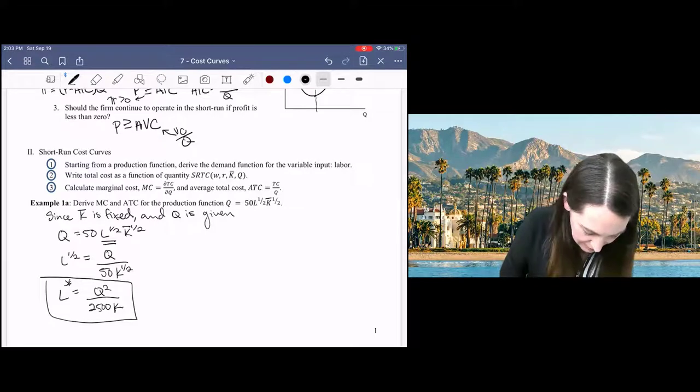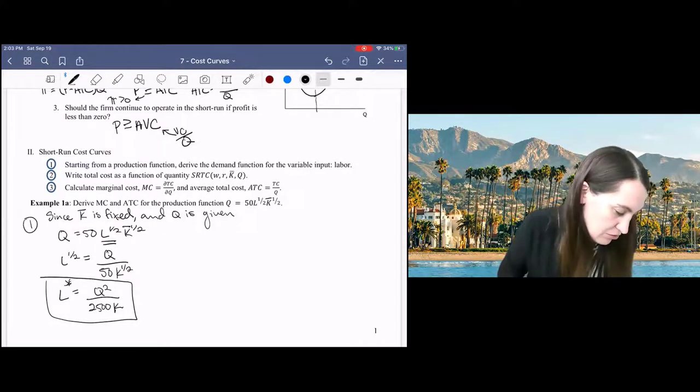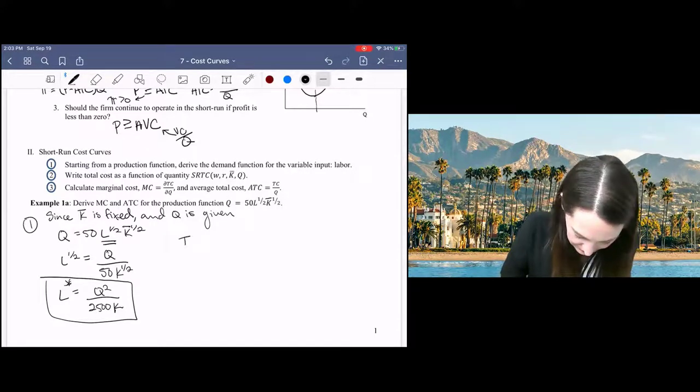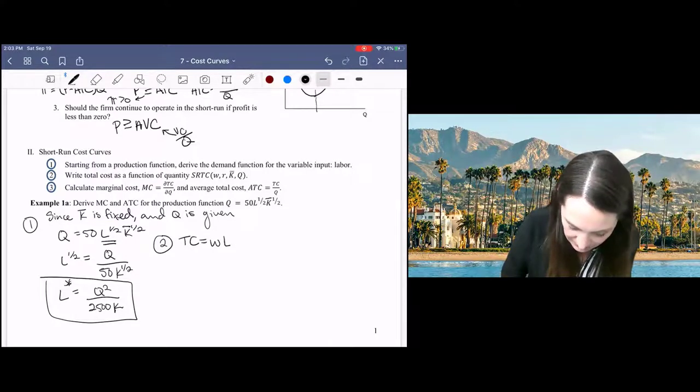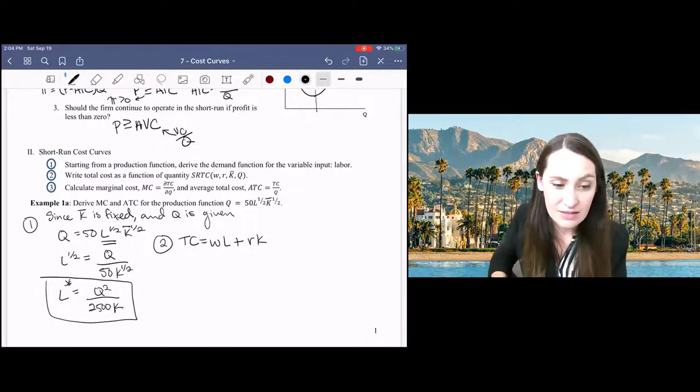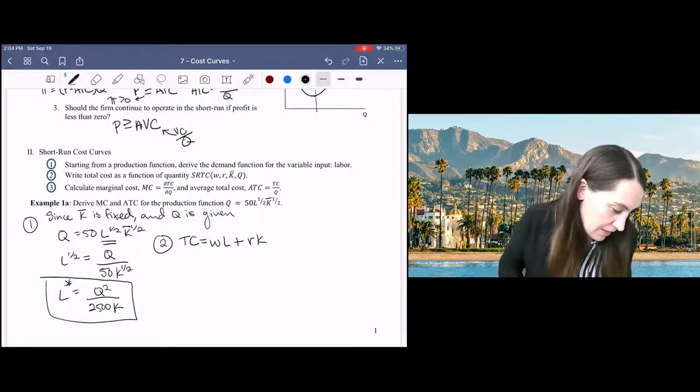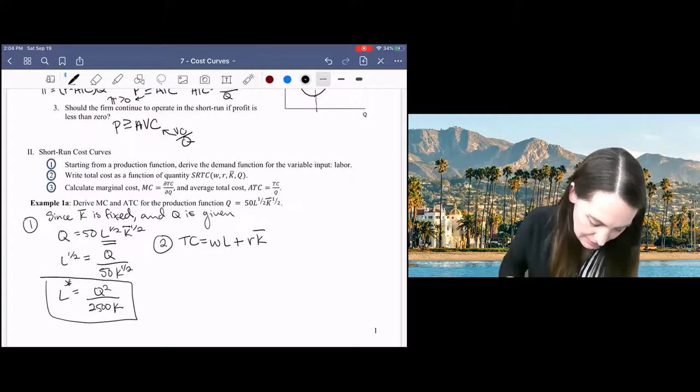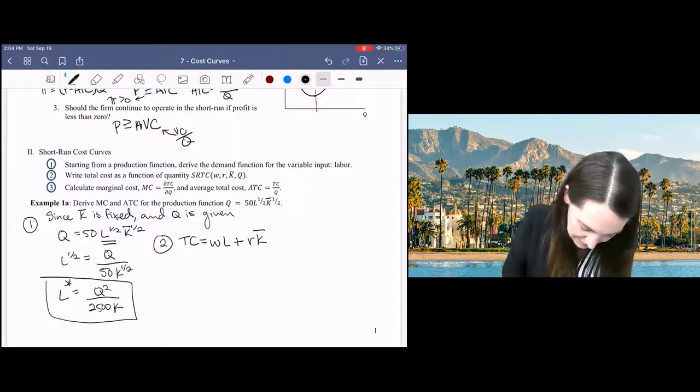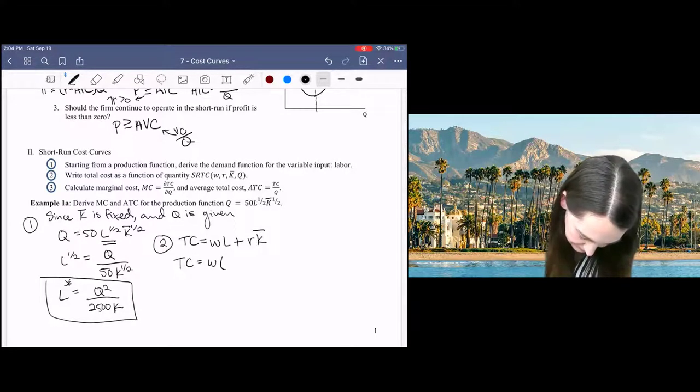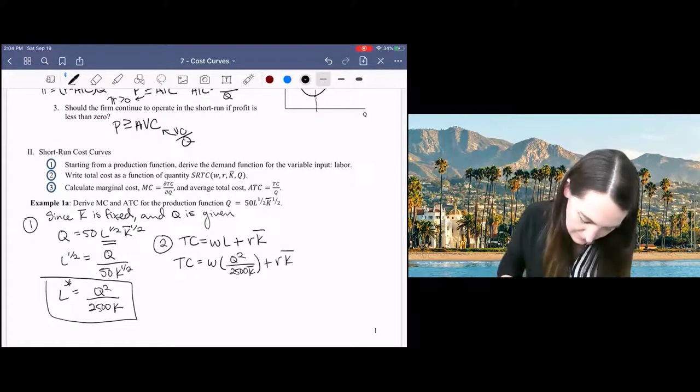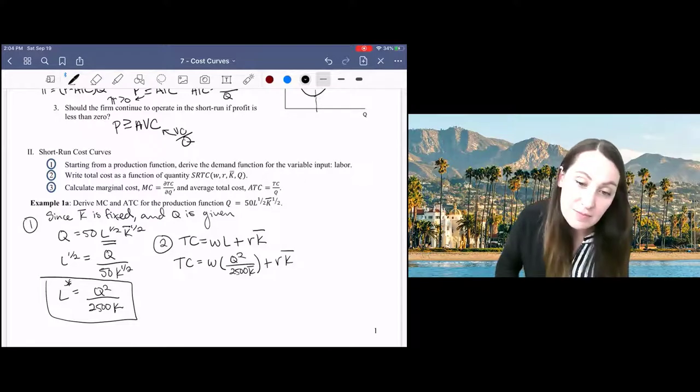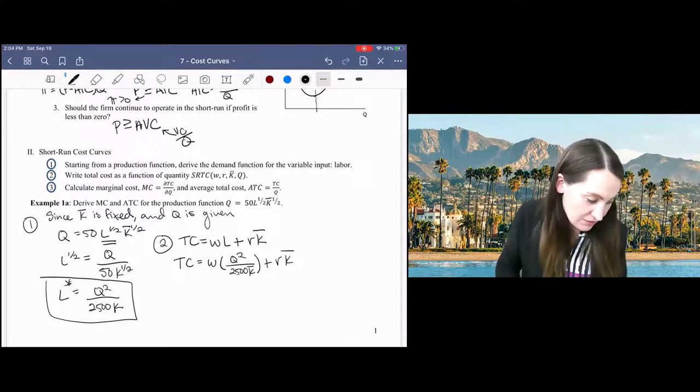All right, so second step is to write down our total cost function, which is just the sum of all of our costs. And here, again, capital is fixed, so we just need to plug in for labor. And that's my short run total cost function.